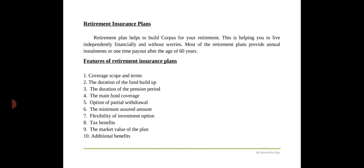The death benefit will be the higher of the coverage or fund value. Coming to the benefits of retirement insurance plans: the first benefit is coverage scope and terms. The nature of the retirement benefit and annuity payouts is generally either immediate or deferred. In the immediate mode, regular payments begin soon after the plan is purchased. In the deferred mode, the annuity works through initial accumulation for a fixed number of years, after which the policyholder becomes eligible for benefits.